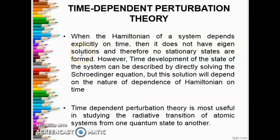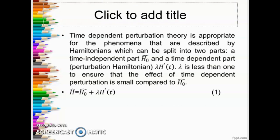When the Hamiltonian of a system depends explicitly on time, it does not have eigen solutions and therefore no stationary states are formed. This is quite different from the case of time independent perturbation theory where there exist definite eigen functions. However, the time development of the state of the system can be described by directly solving the Schrödinger equation, though the solution will depend on the nature of dependence of the Hamiltonian on time. Time dependent perturbation theory is most useful in studying the radiative transition of atomic systems from one quantum state to another.